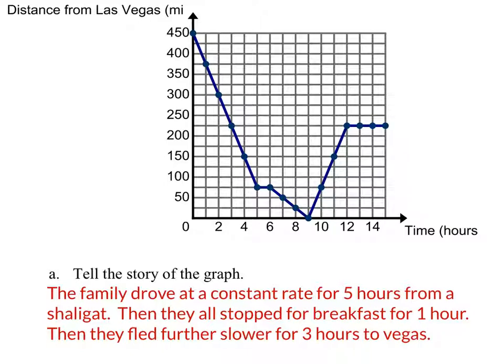We've got to tell the story of this. The family drove at a constant rate for five hours from a shaligat. Then they all stopped for breakfast for one hour. Then they fled further, but slower for three hours to Vegas. Then what happened? They found Vegas in the shaligat, and then they turned around.